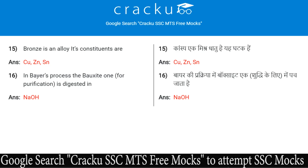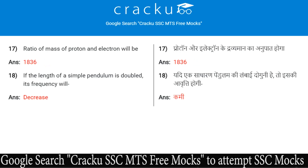In Bayer's process, the bauxite ore is digested in NaOH. The ratio of mass of proton to electron is 1836.